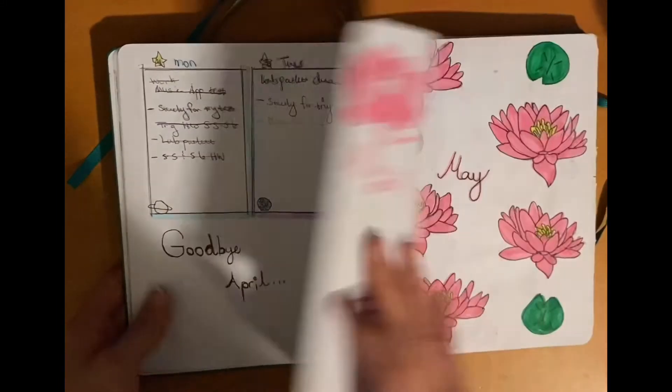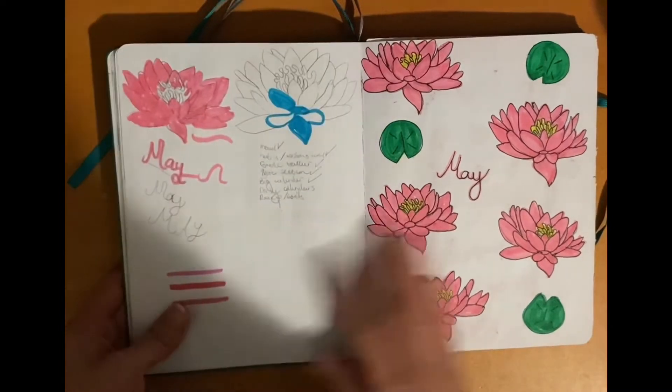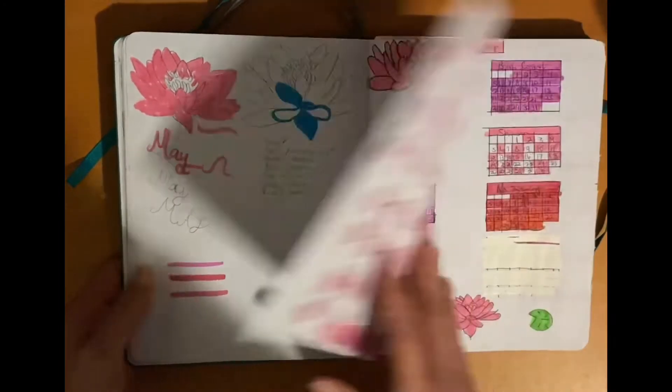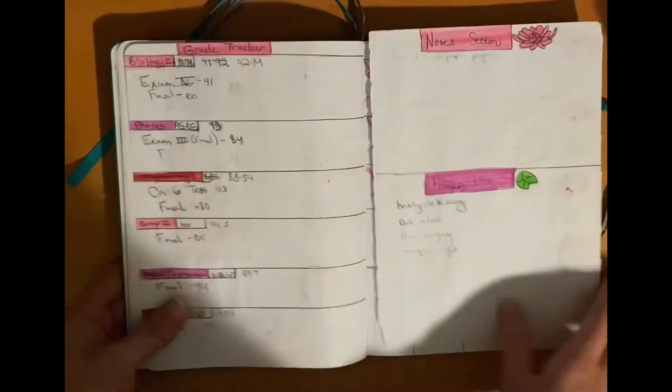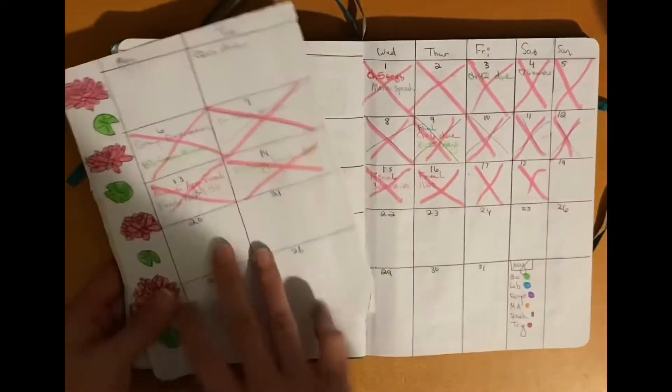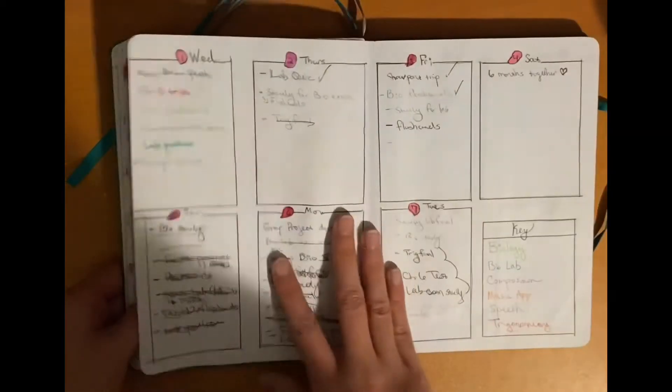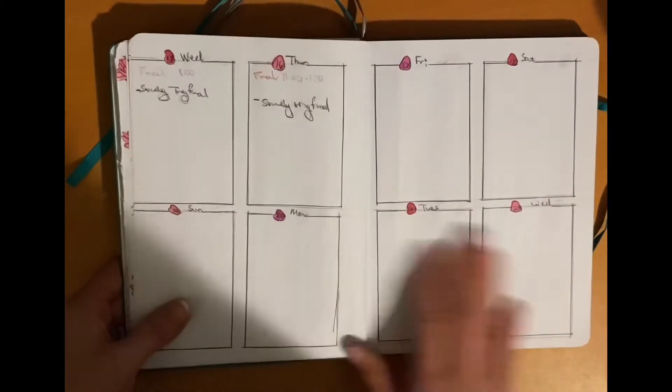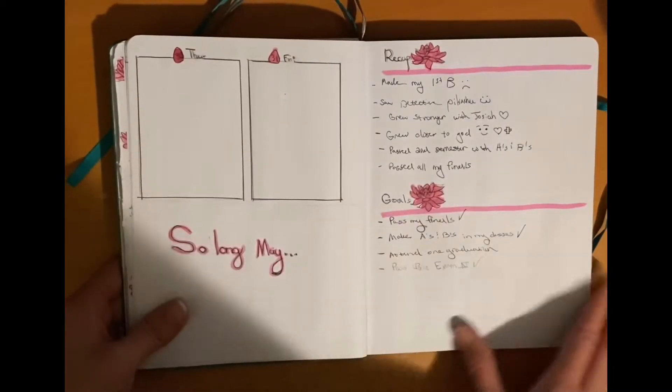Moving on to May, I decided to buy some brush pens. They weren't that good to be honest, but they were okay. The theme was lotus flowers, and that comes mostly from my mom's side of the family. My mom absolutely loves a lotus flower.